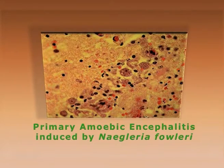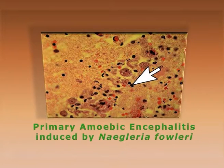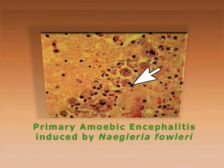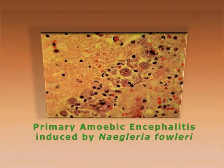Coming to the first organism, Naegleria fowleri, which was described by Fowler in 1965. This disease is called primary amoebic encephalitis, which occurs in the brain tissue of mammals. These are the different amoebic cysts present in the brain tissue, causing the dreadful disease of primary amoebic meningoencephalitis (PAM). The brain has swollen and shown dark red or reddish-brown lesions on the brain surface.